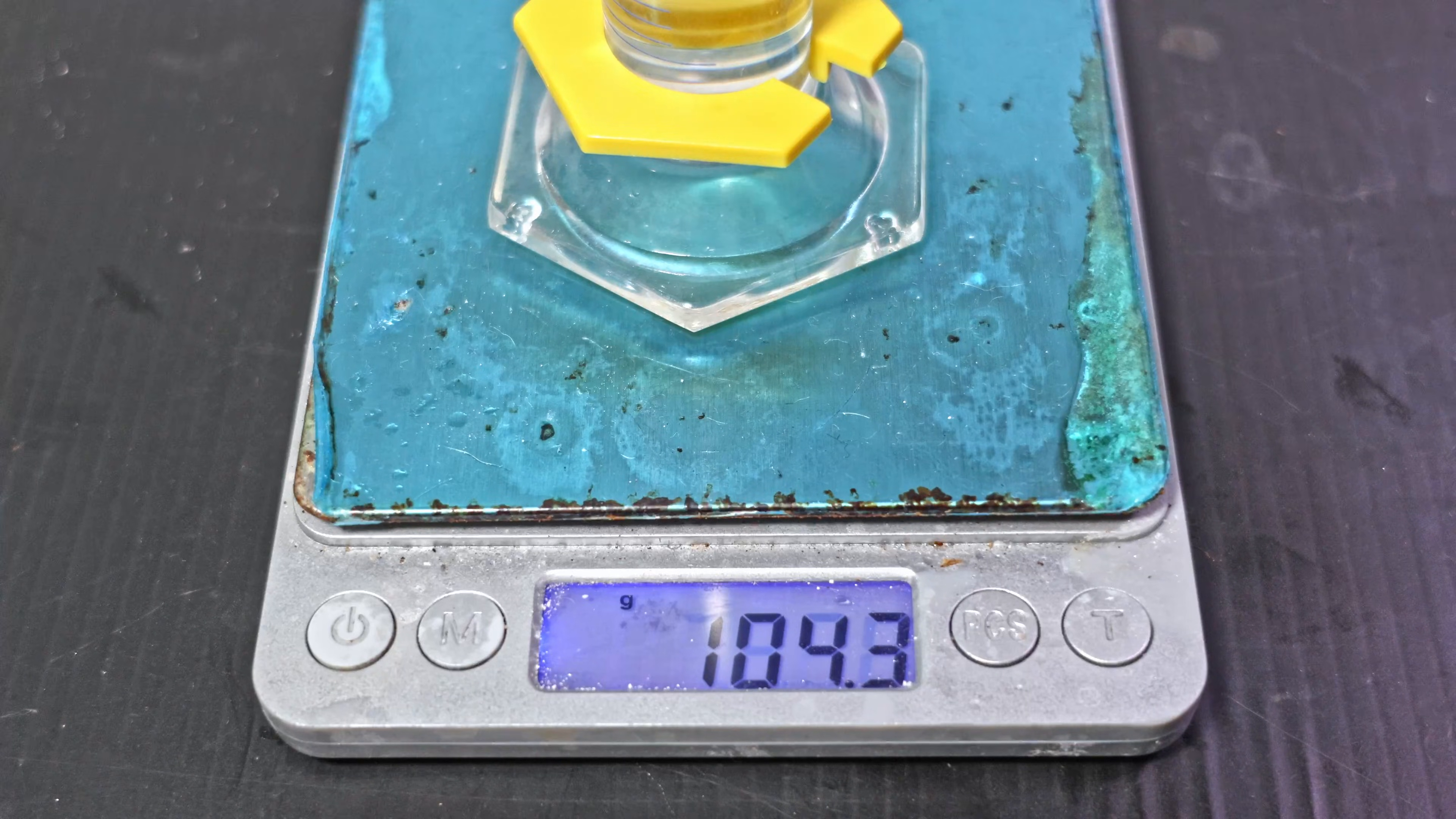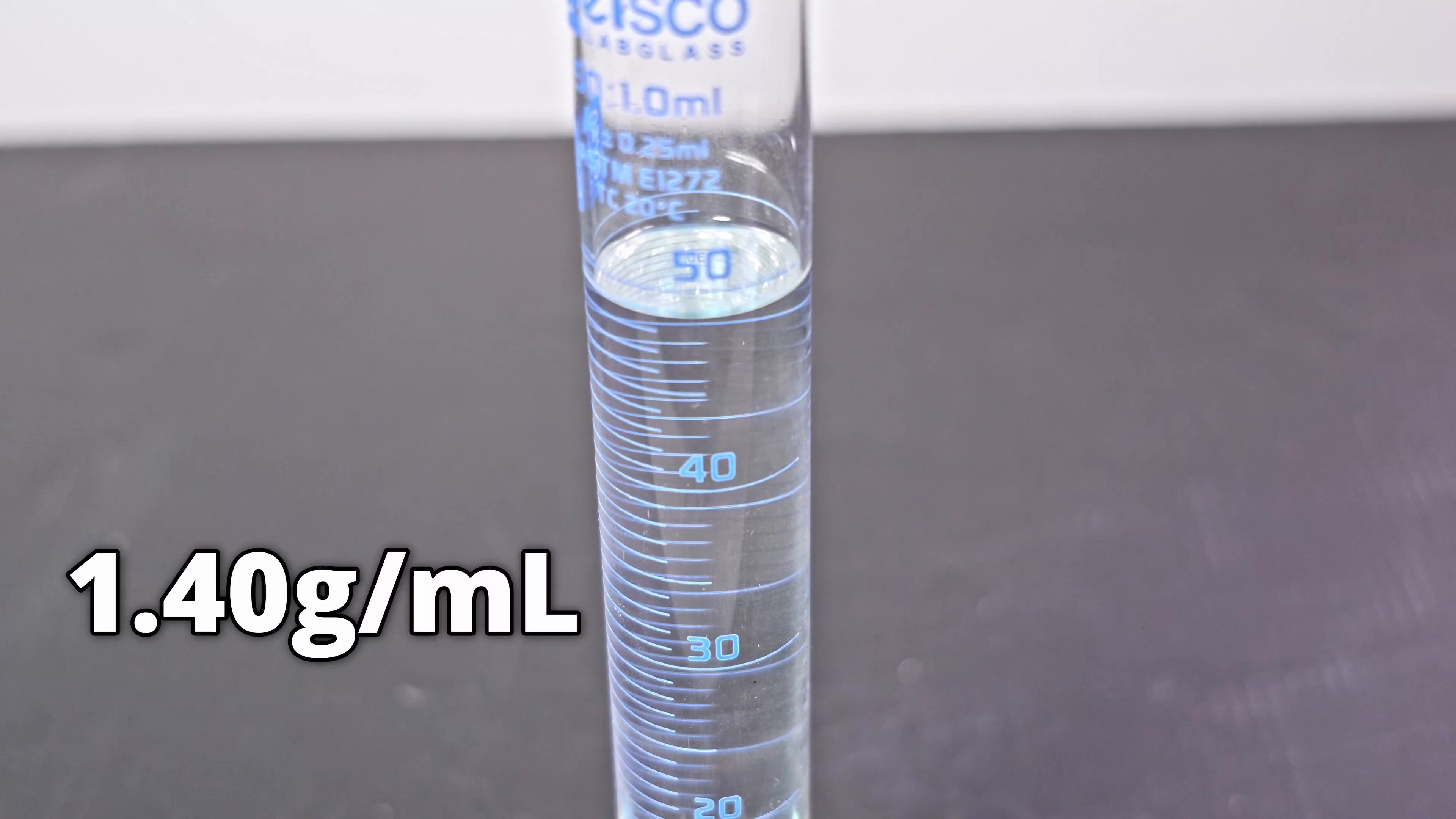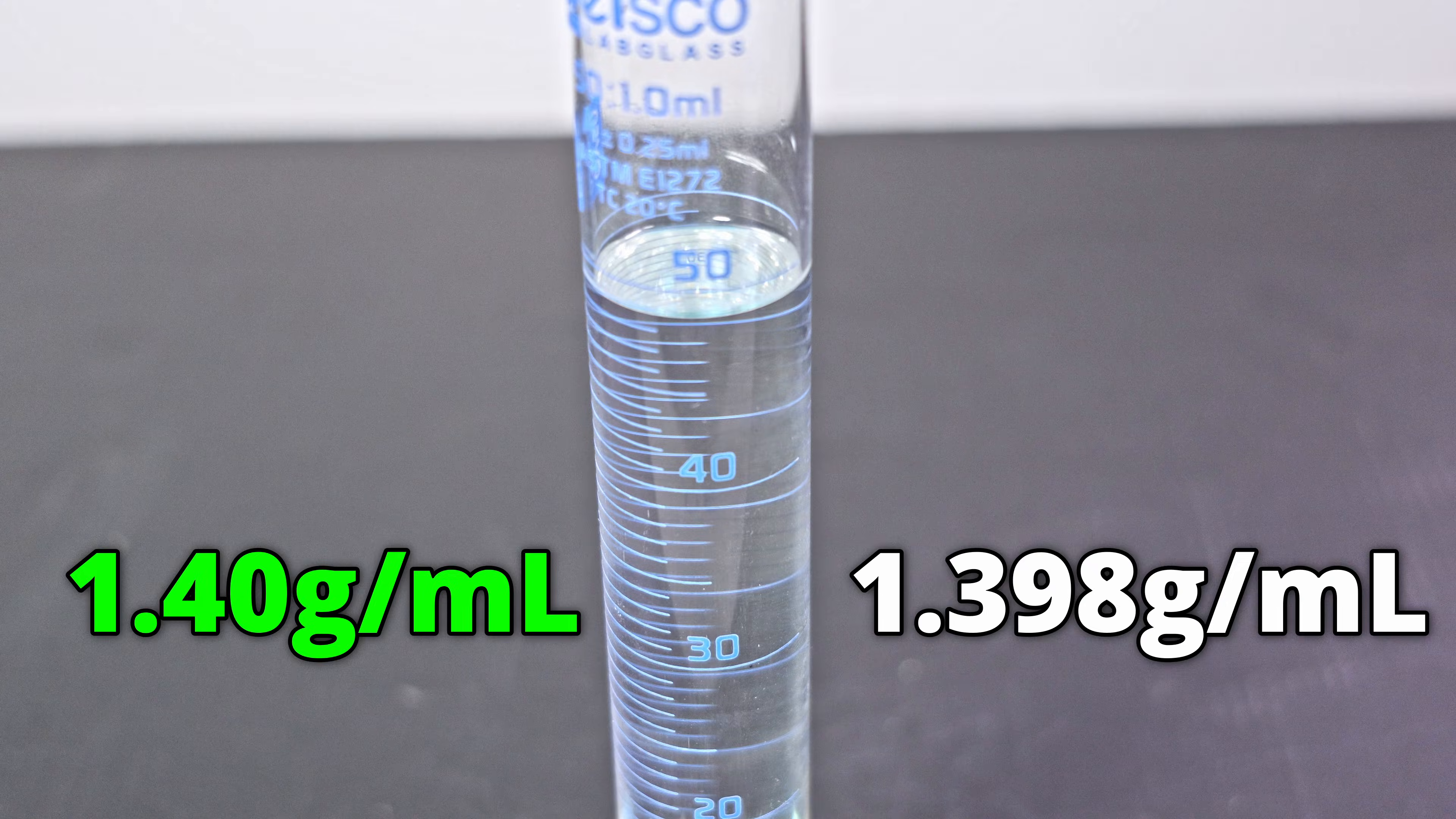For my density test, I weighed 67.5 grams of allyl bromide. The volume is a bit over 48 milliliters, making the density 1.4 grams per milliliter. That is perfectly in line with allyl bromide's reported density at 1.398 grams per milliliter, definitively proving I have made pure allyl bromide.